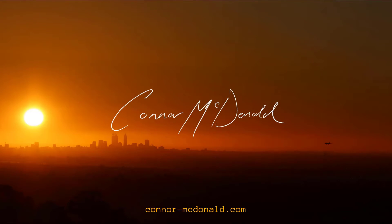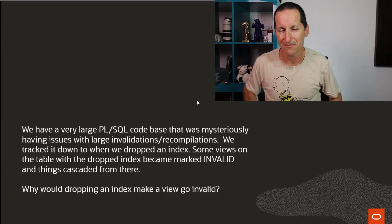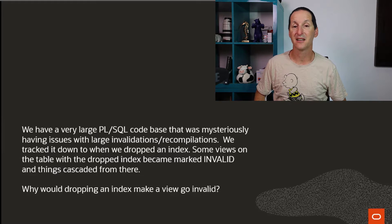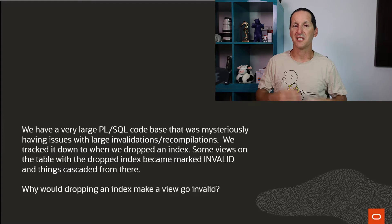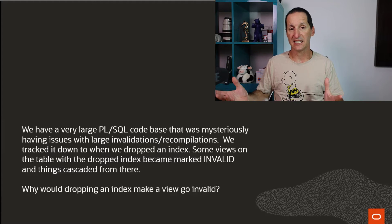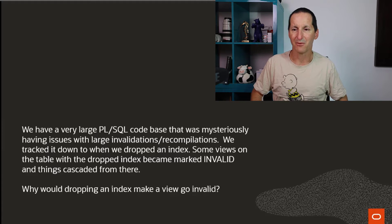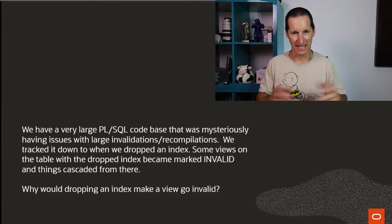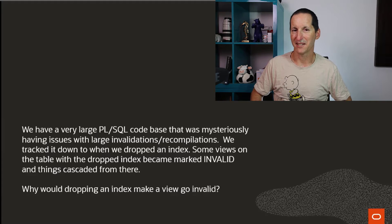Why would dropping an index make a view invalid? We have a very large PL/SQL codebase that was mysteriously having issues with large invalidations and recompilations. We all know that when you drop a table, anything referring to that table — like PL/SQL, triggers, et cetera — gets invalidated. But they had views. We tracked it down to when we dropped an index; some views on the table with the dropped index then became marked invalid, and things cascaded from there.